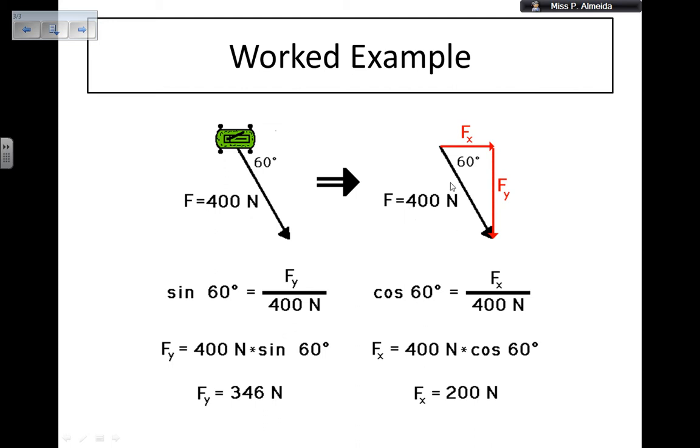So, again, my horizontal component is this one, Fx. I'm calling it Fx. And again, imagine that the sun is shining directly on top of that vector, and this would be the shadow that it would make. And my vertical component is this one, Fy, the force in the Y direction. Again, imagine that the sun is shining in this exact direction of the arrow, and this would be the shadow that it would make.